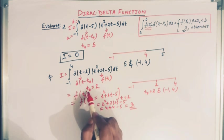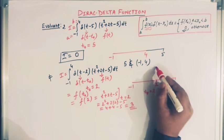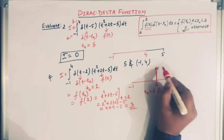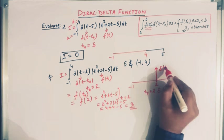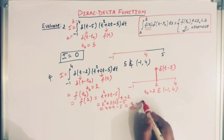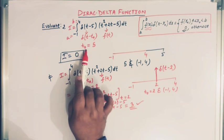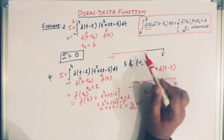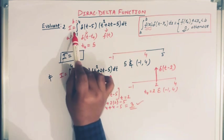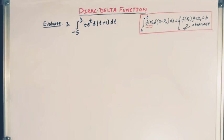So comparing the two cases: when t₀ = 2 it lies between -1 and 4, so the integral with δ(t - 2) gives 3. When t₀ = 5 it does not belong to the interval, so the integral with δ(t - 5) gives 0.